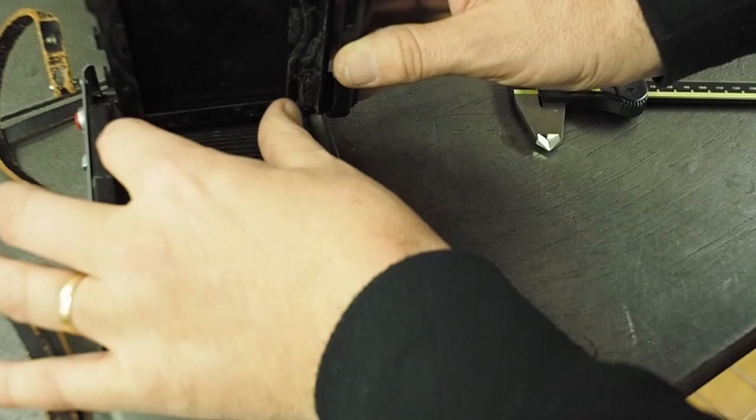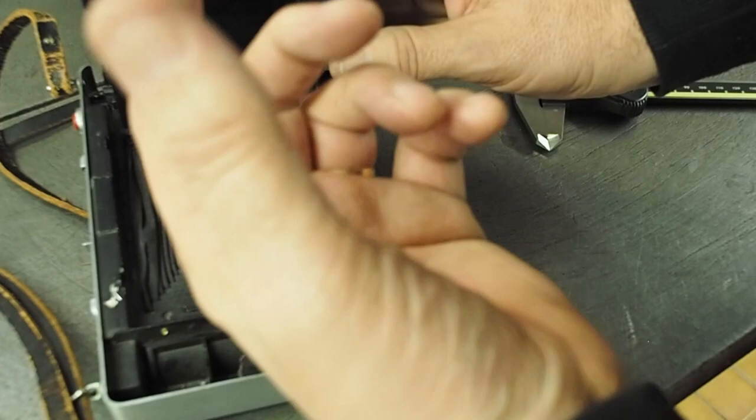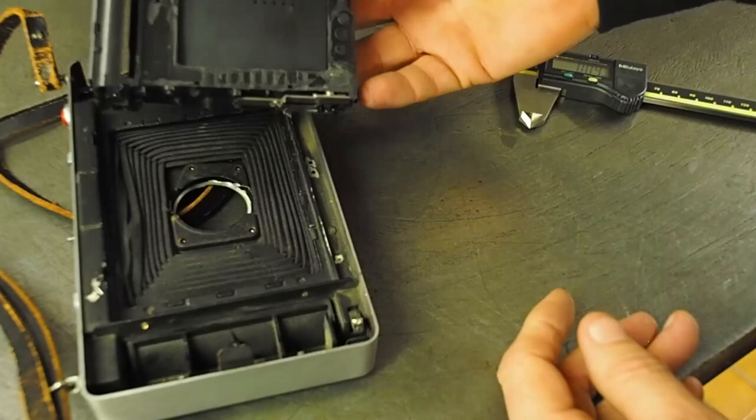Given that the Instax film is narrower in height than the original pack film, the viewfinder's frame is not going to be accurate without modification anyway.